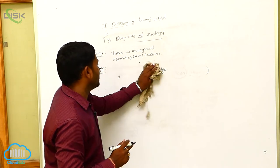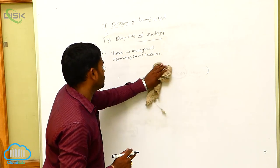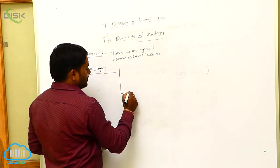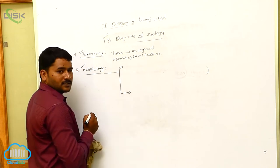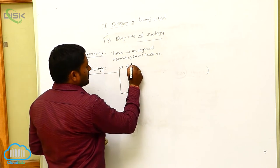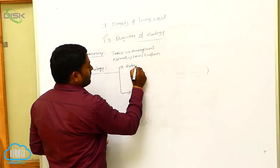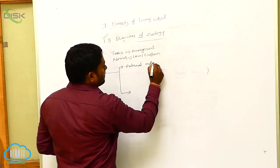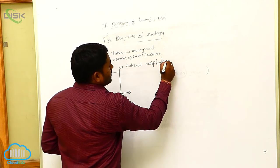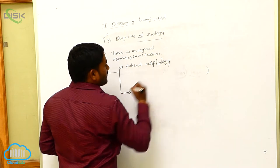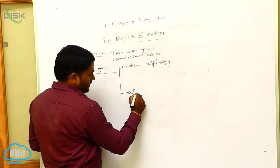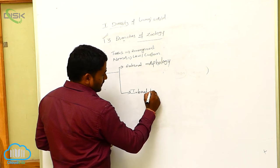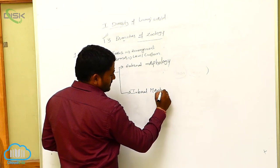Morphology is again divided into two branches. The first one is external morphology, and the second one is internal morphology.